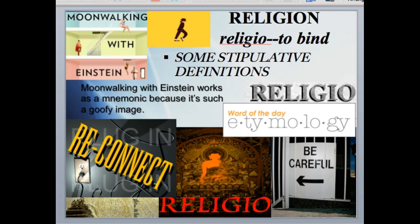Before I give you some stipulative or working definitions of religion, I need to say something about that strange image in the upper left corner of this slide. Moonwalking with Einstein is the name of a book published a few years ago. The author had won a prestigious memory prize. This book is about effective ways of memorizing things. Let's take the notion of Einstein moonwalking — you all know the famous scientist, and you probably know the dance Michael Jackson made famous. Please imagine Einstein moonwalking. It is a goofy image, one you are not likely to forget.